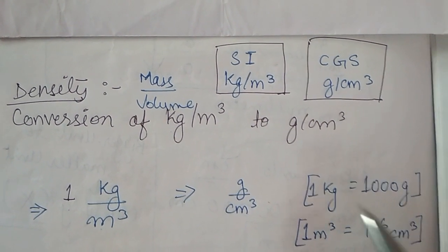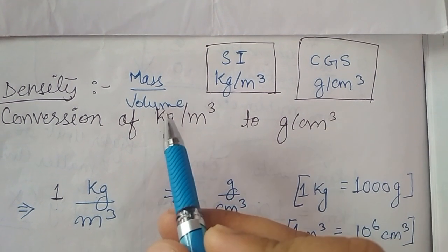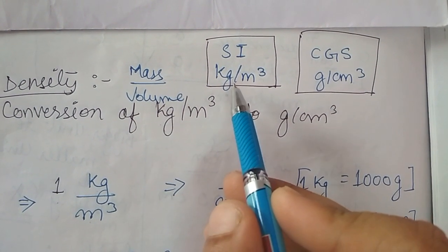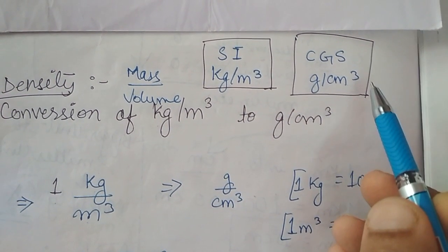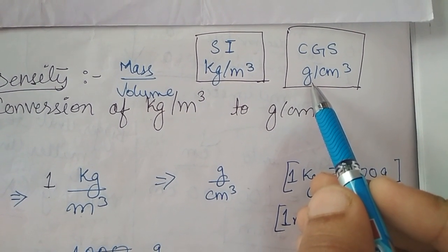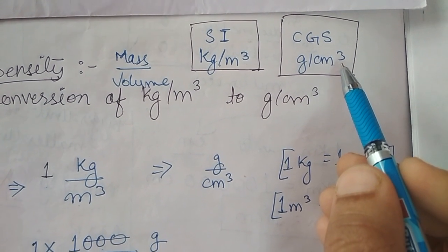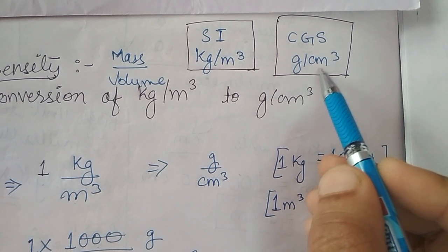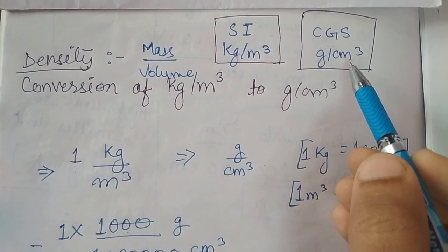Density is equal to mass upon volume. The SI unit of mass is kilogram and the SI unit of volume is meter cube, so the SI unit of density will become kilogram per cubic meter. Similarly, the CGS unit of mass is gram and the CGS unit of volume is centimeter cube, so the CGS unit of density will become gram per centimeter cube. In this chapter we have to convert kilogram per cubic meter to gram per cubic centimeter.